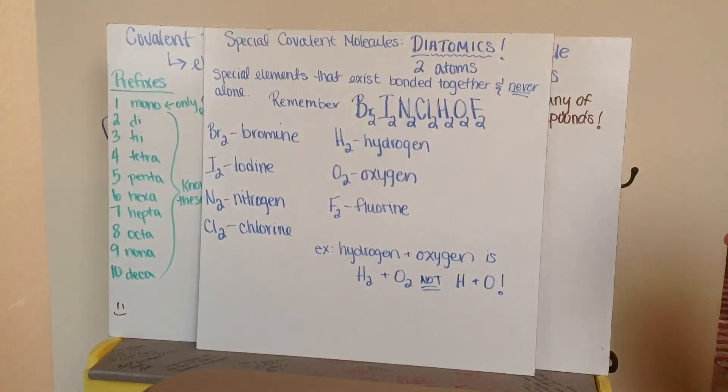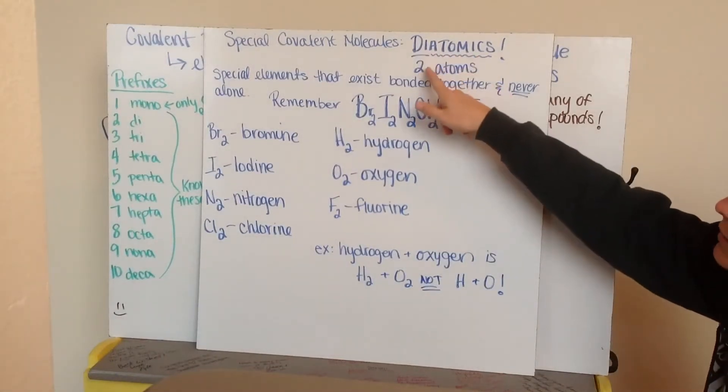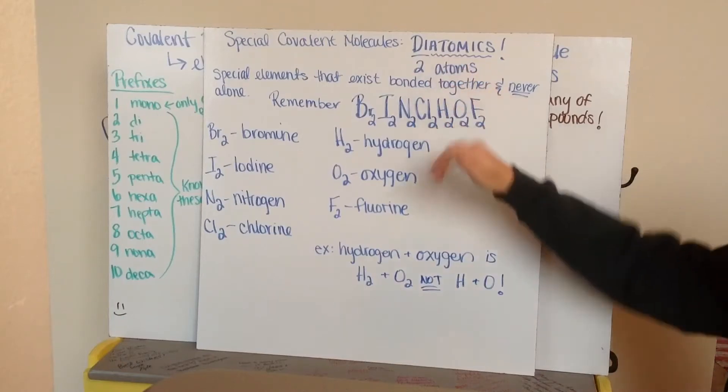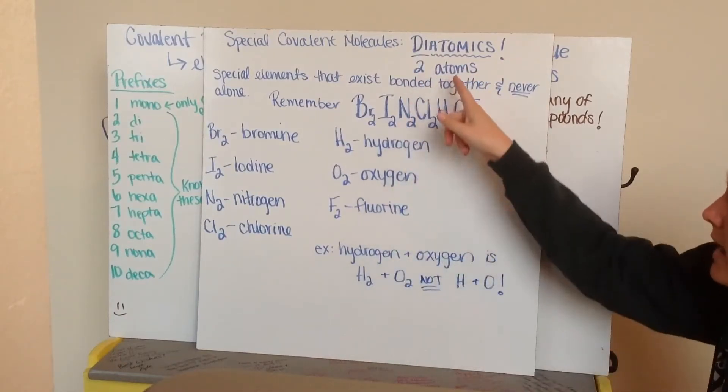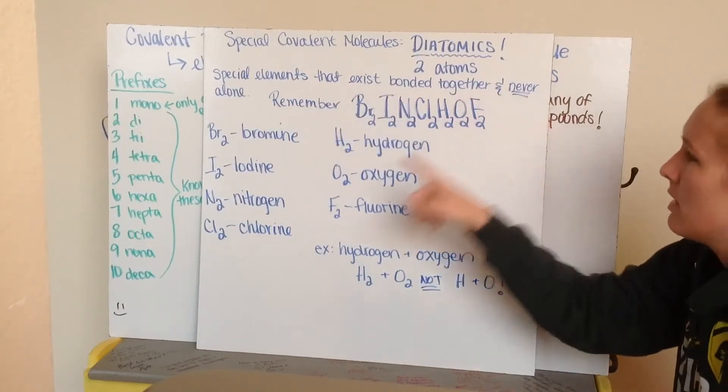There's a couple special covalent molecules that we need to learn about, and there are diatomics. Diatomics, di for two, atomic for atom. So, literal translation of two atoms. These are special elements that exist bonded together, and they're never alone.